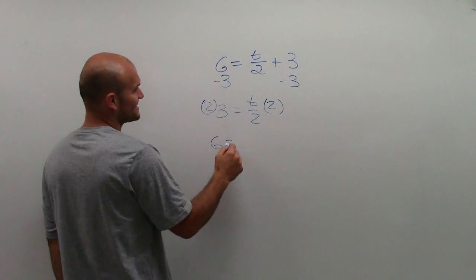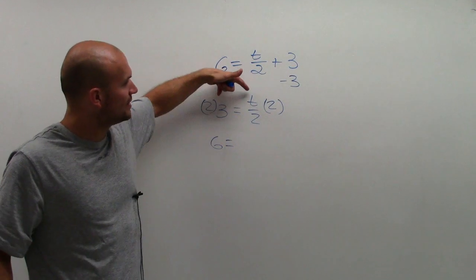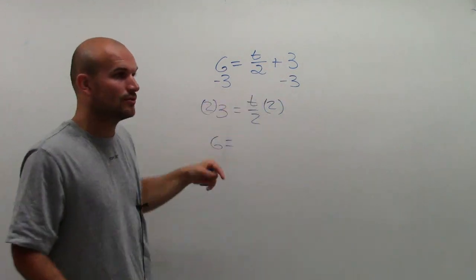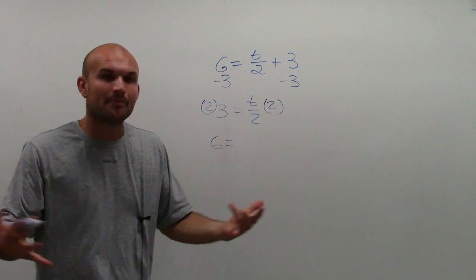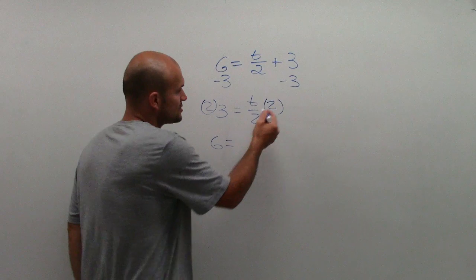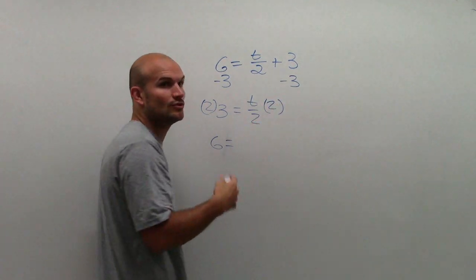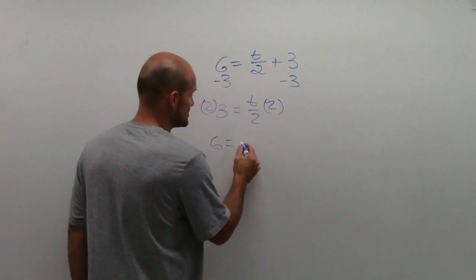2 times 3 is 6 equals, now remember, look up here. I have t divided by 2 and then multiply by 2. Well, if you look at those, the operations are undoing each other. So t times 2 divided by 2, that equals 1. t times 1 is just t.